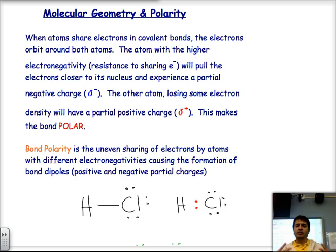As you may recall, when atoms bond in a covalent bond, they're sharing electrons. Those valence electrons that are being shared have to orbit around the nuclei of both atoms. Now, how much time they spend around each particular nucleus depends on the electronegativity of the atoms. Remember, electronegativity is the resistance of an atom to share its valence electrons in a covalent bond.